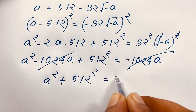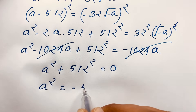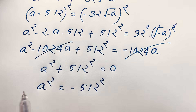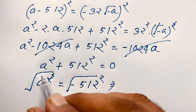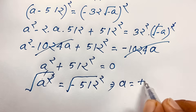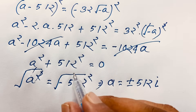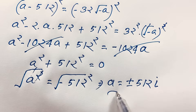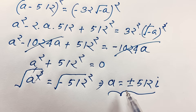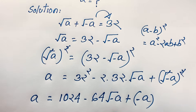Moving 512² to the other side: a² = negative 512². Taking the square root of both sides, the square cancels, and we get a = plus or minus square root of negative 512² = plus or minus 512 times i, where i is the imaginary unit. So our final answer is two solutions, both complex numbers — there is no real solution. Thank you all! If you enjoyed this math olympiad question, please subscribe to my channel for other interesting videos. Goodbye, take care!